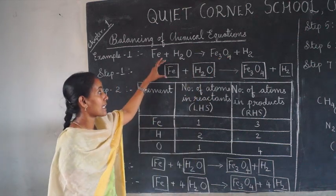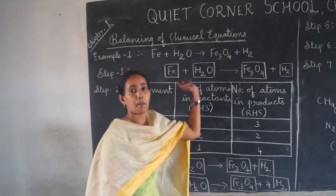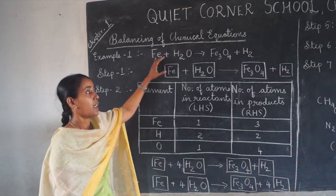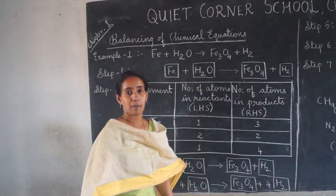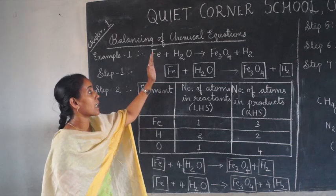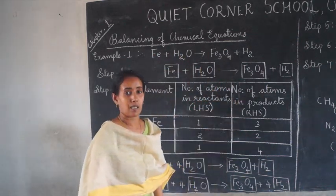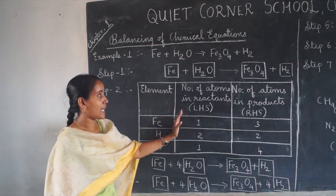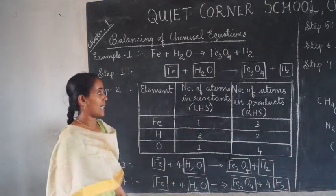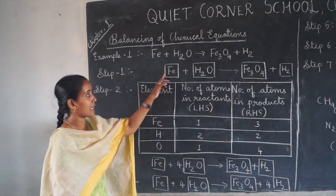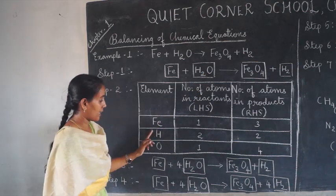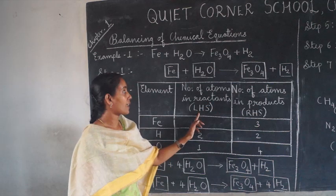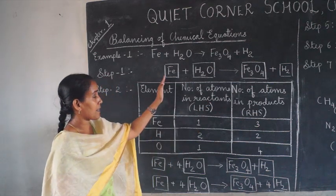The first step is writing each compound in boxes — inside the box we cannot put any number. Numbers can be written only on the left side of each box. The second step is identifying the number of atoms of each element on the left-hand side as well as the right-hand side — the elements iron, hydrogen, and oxygen.